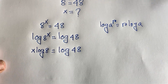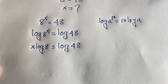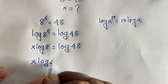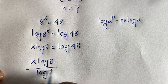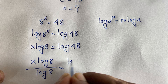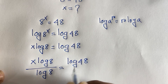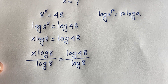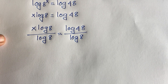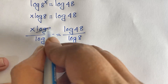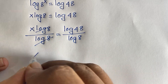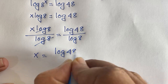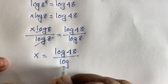Now I divide both sides by log 8. We get x log 8 over log 8 equals log 48 over log 8. The log 8 terms cancel, so x is equal to log 48 over log 8.